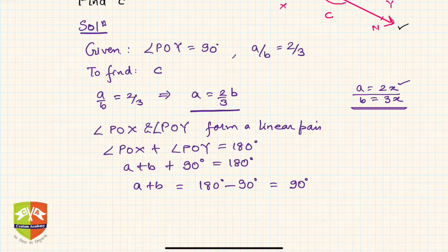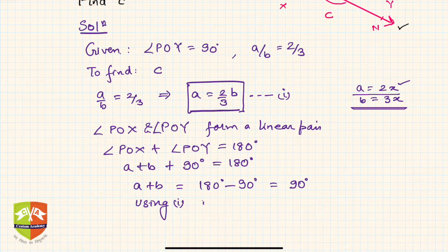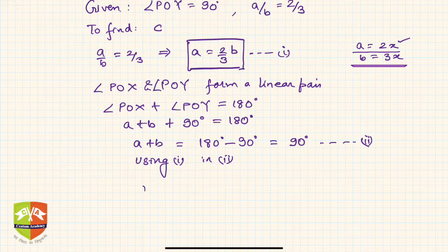A plus b is 90 degrees, and we also know that a is 2/3 times b. So let's use equation 1. Using equation 1 in equation 2, what will you get?